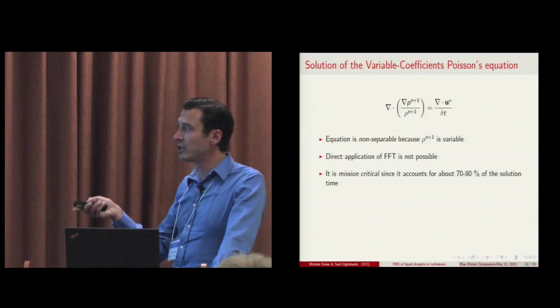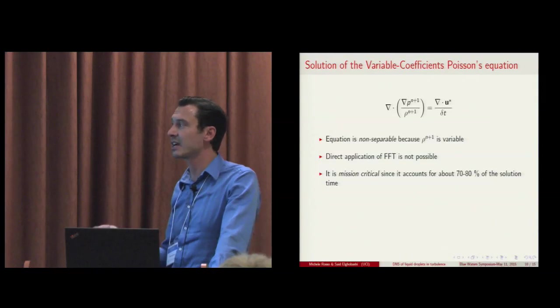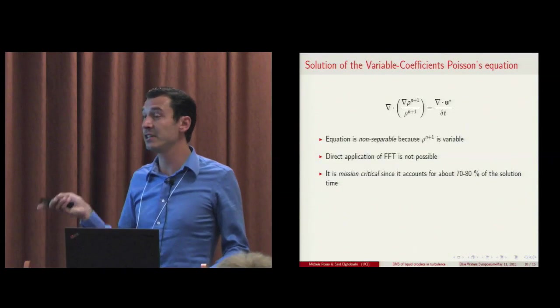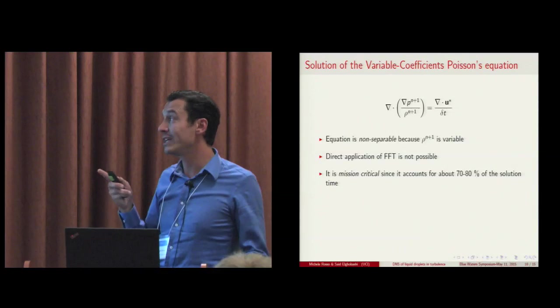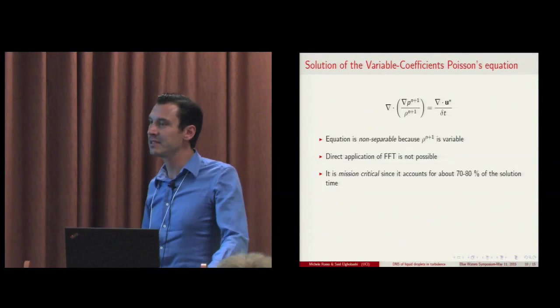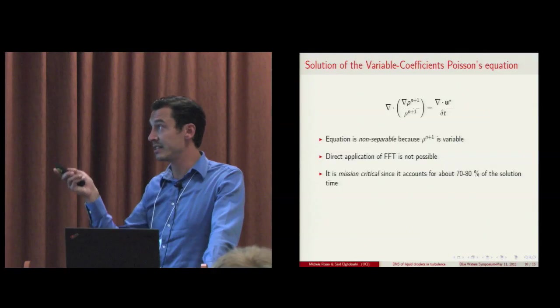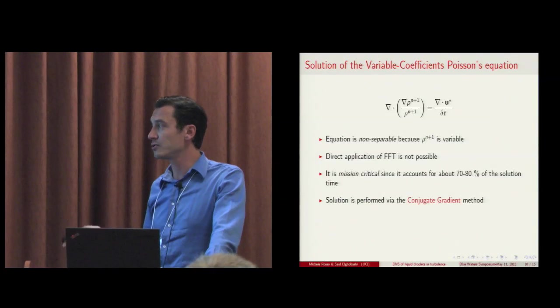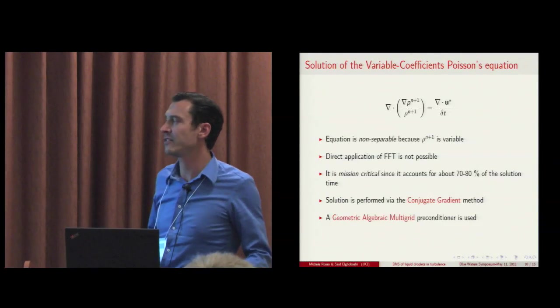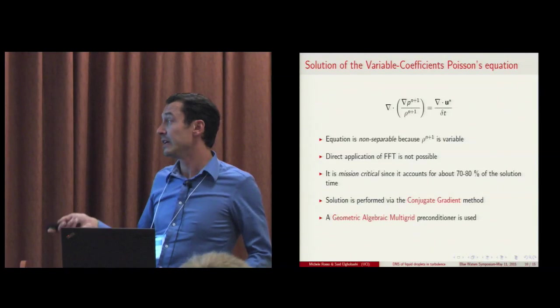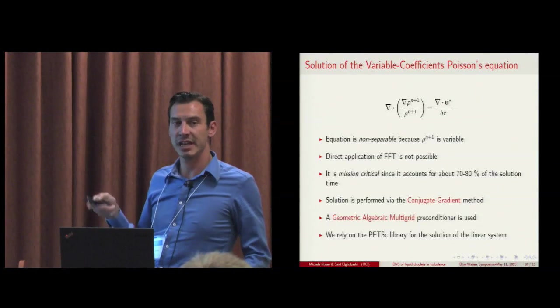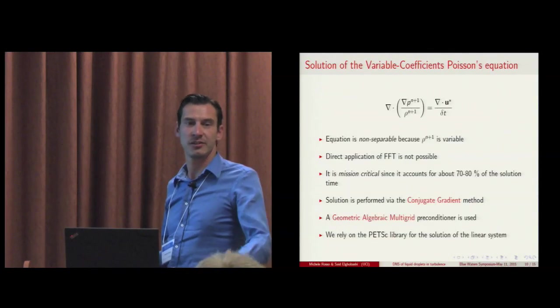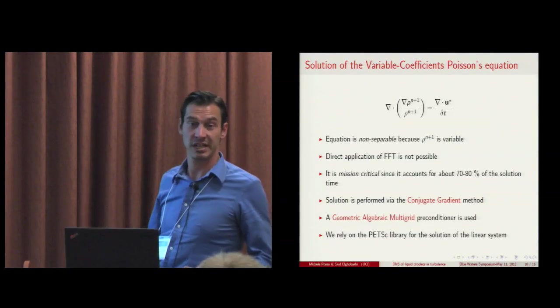And also, the Poisson equation is mission critical since it accounts for about 70-80% of the solution time. Since we can't apply FFT for the solution of this equation, we need to solve the linear system that arises from the finite difference discretization of the Poisson equation. And to do so, we decided to use the conjugate gradient method together with the geometric algebraic multigrid preconditioner. We didn't develop all the details of the solution, but we took advantage of the PETSC library that provided us with all the tools necessary to put together the linear solver for the system.